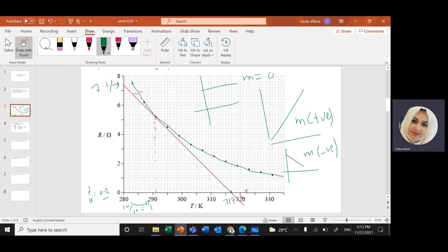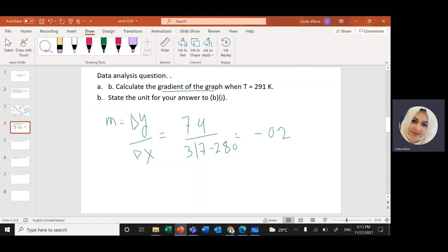Now what will be the unit for the slope or the gradient? Y, the unit of Y is ohm, unit for X is Kelvin. So it will be ohm over Kelvin, or I can say negative 0.2 ohm per Kelvin.